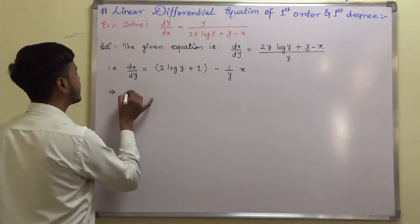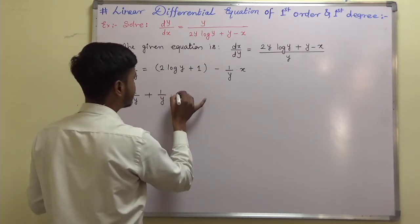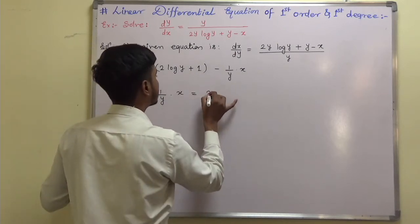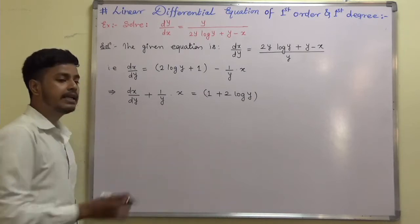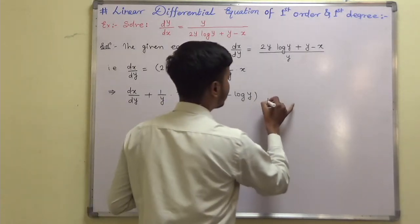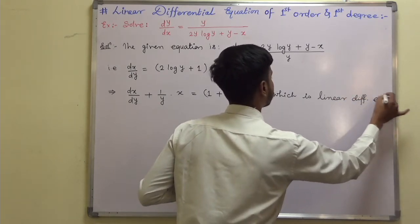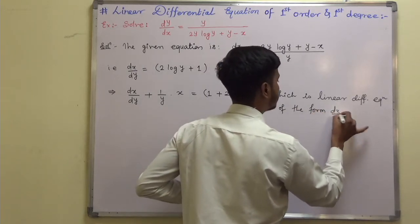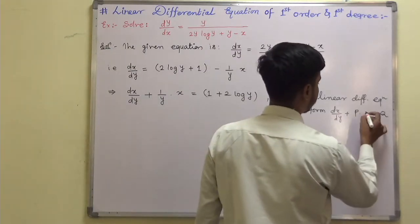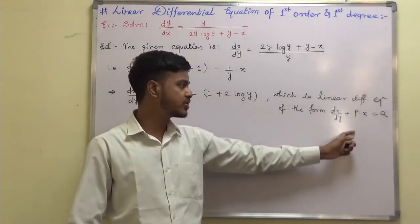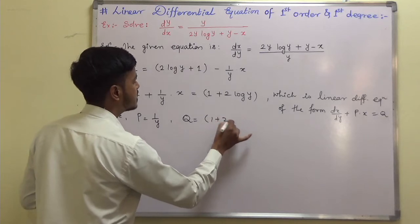You can write it as dx by dy, taking this to the left: dx by dy plus 1 by y into x is equal to 1 plus 2 log y. This is a linear differential equation of the form dx by dy plus p into x is equal to q. Comparing, p is 1 by y and q is 1 plus 2 log y.